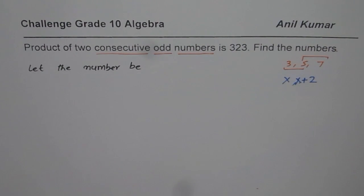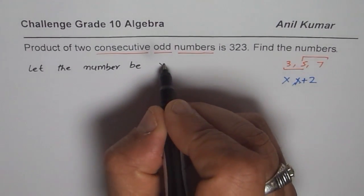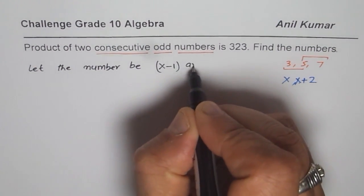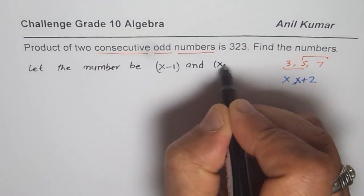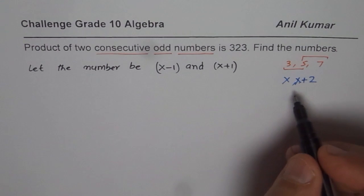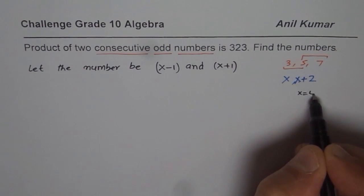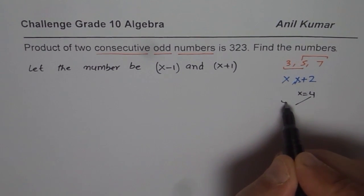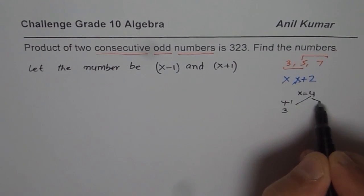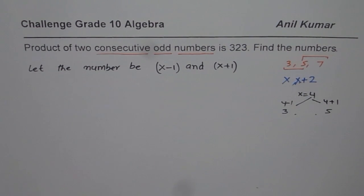But now what I will do here is I will say let the numbers be how about this x minus 1 and x plus 1. Now if I take x as a number for example if I take x as equals to 4 in that case 4 minus 1 is 3 and 4 plus 1 is 5. I do get two consecutive odd numbers, do you get the idea?